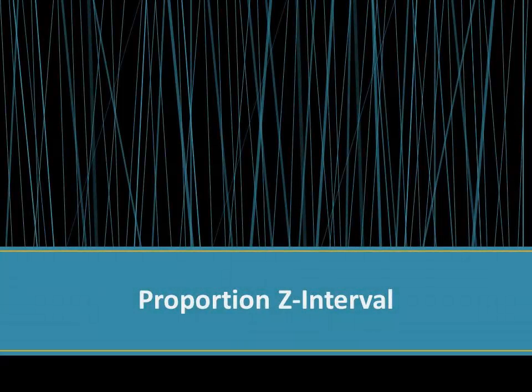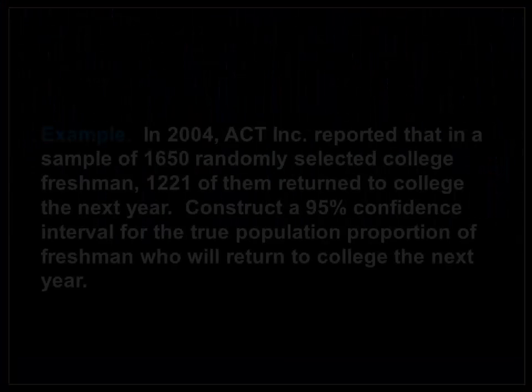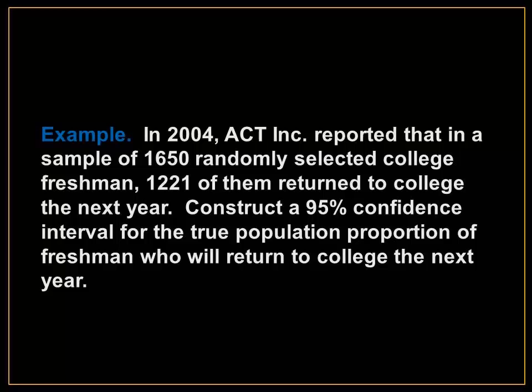The proportion Z-interval. For example, in 2004, ACT reported that in a sample of 1,650 randomly selected college freshmen, 1,221 of them returned to college the next year. Construct a 95% confidence interval for the true population proportion of freshmen who will return to college the next year.